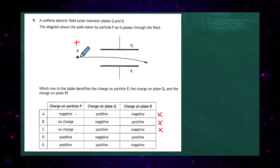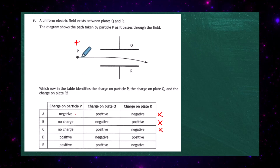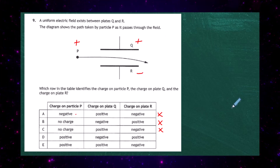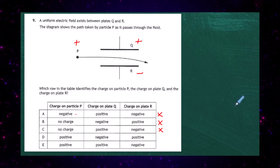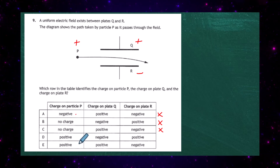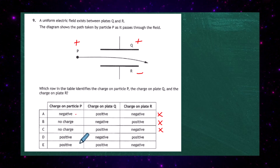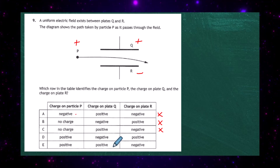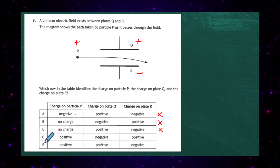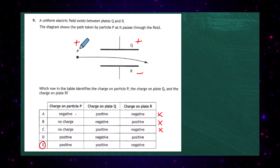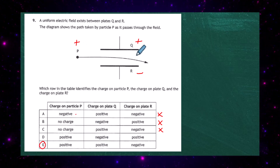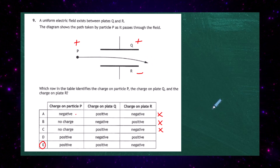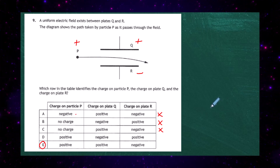If particle P is positively charged, it's attracted to the opposite sign in the plate — so plate R must be negative and plate Q must be positive. We're looking for particle P positive, plate Q positive, and plate R negative. That matches response E. The particle is deflected away from the positive plate and attracted towards the negative plate, so the correct response for question 9 is E.